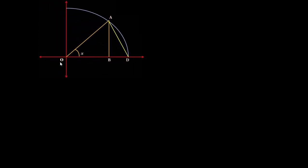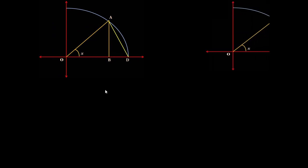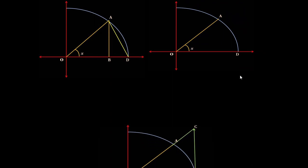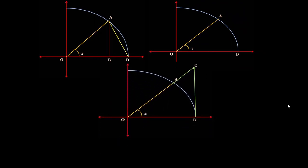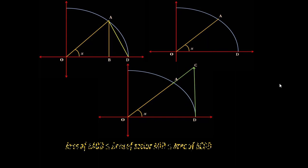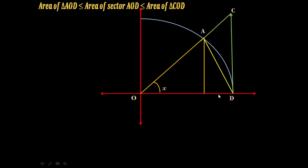So we have the area of triangle AOD, the area of sector AOD, and the area of the bigger triangle COD. If we compare the areas of these three figures, we get: area of triangle AOD is less than or equal to area of sector AOD, which is less than or equal to area of triangle COD.